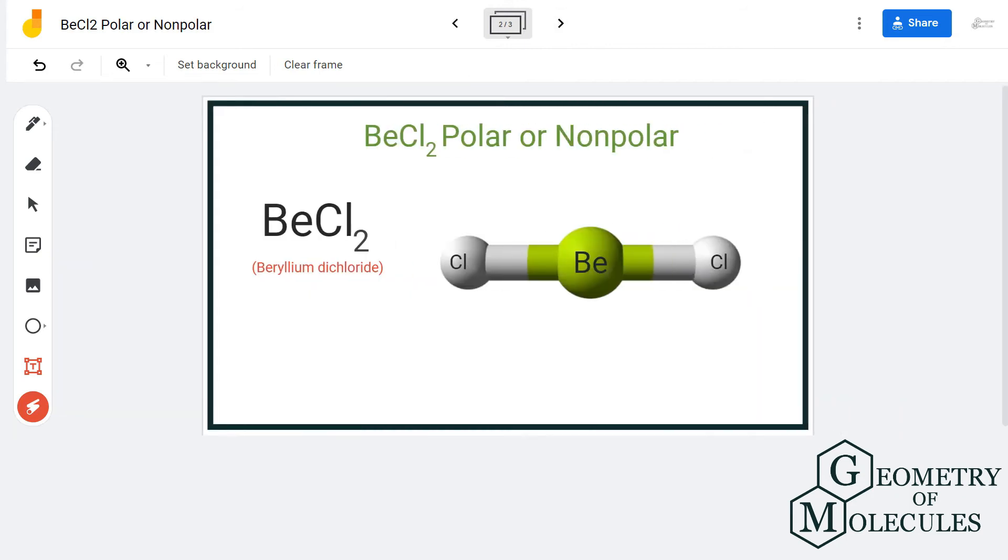As the net dipole moment in this molecule is zero, there are no formation of poles, and hence BeCl2 (beryllium dichloride) is a nonpolar molecule.